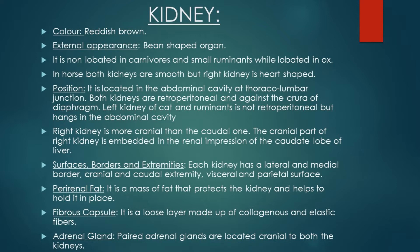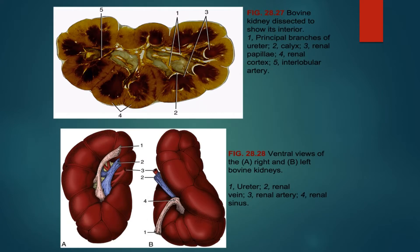The color of bovine kidney is reddish brown. It is a bean-shaped organ with reddish brown color. It is non-lobated in carnivores and small ruminants, while in ox it is lobated. Externally, it consists of many lobes that can be easily judged with the naked eye.